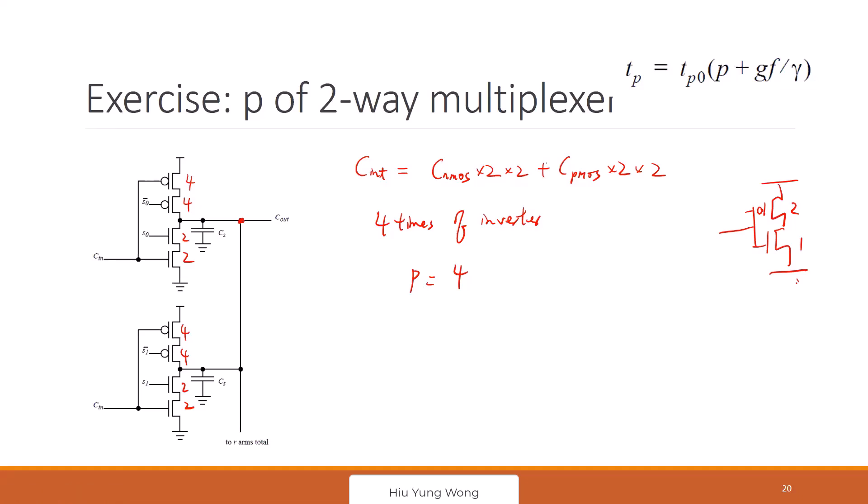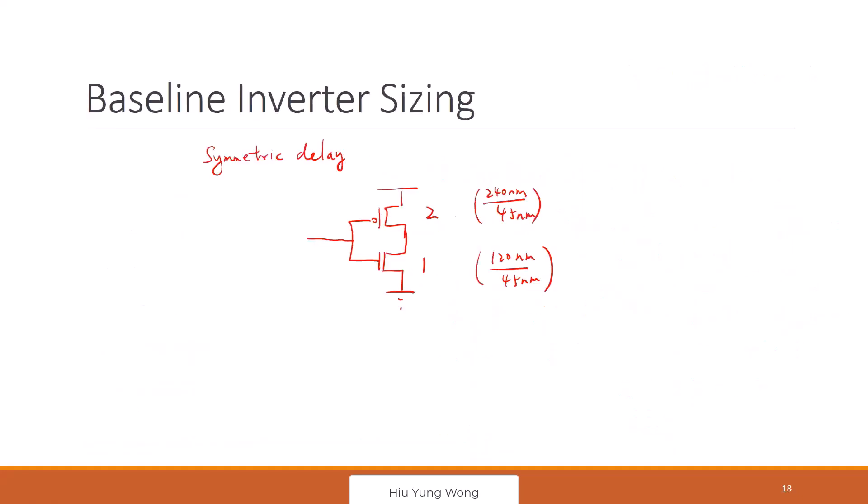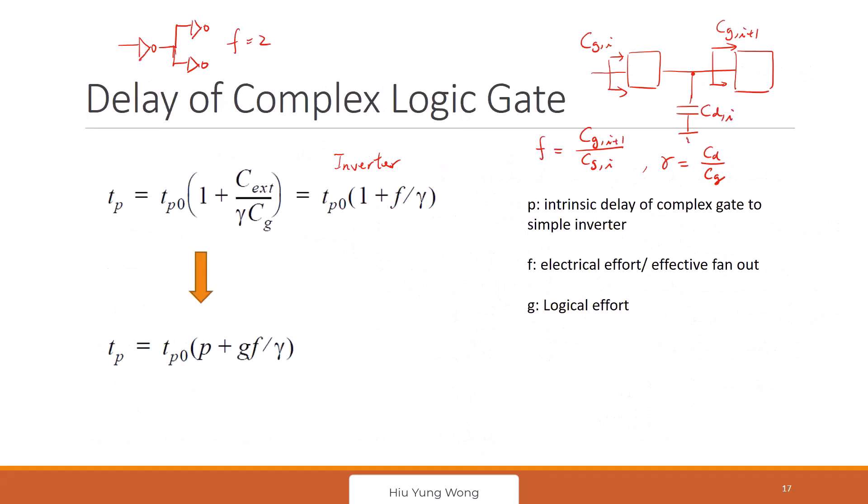So after all, p-value is to compare the intrinsic delay of the NMOS and the PMOS. And if you remember how we derived the equation, you probably remember that TP0 times one is the intrinsic delay. That's why we just put p here. So p times TP0 account for the intrinsic delay part.